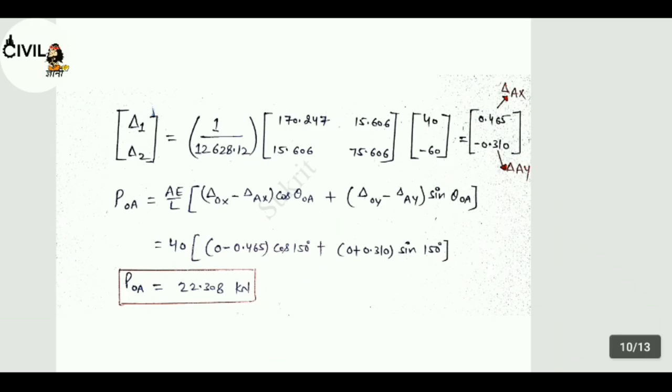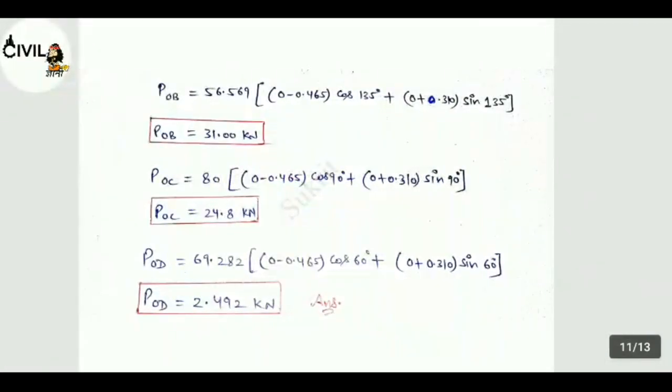Similarly, POB: 56.569 into 0.465 into cos 135 plus 0.310 into sin 135 degree. Solve: POB value is 31 kN. Similarly, POC value is 24.8 kN and POD value is 2.492 kN.